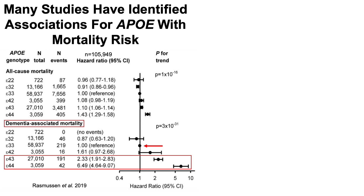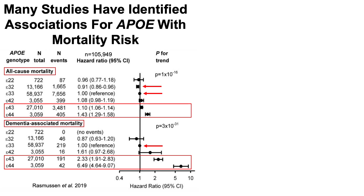Dementia-associated mortality is just one outcome. What about all-cause mortality, which includes deaths related to cardiovascular disease, Alzheimer's disease, cancer, and so on? Compared to ApoE3, having one ApoE4 allele was associated with a 10% increased all-cause mortality risk, and having two E4 alleles was associated with a 43% increased all-cause mortality risk. Conversely, having one allele of ApoE2 (E3-2) was associated with a significantly reduced all-cause mortality risk compared to ApoE3.